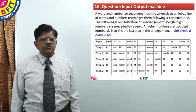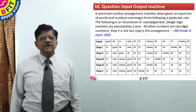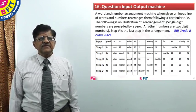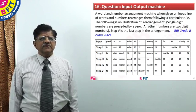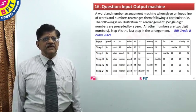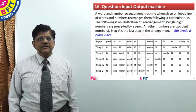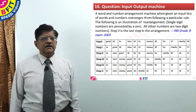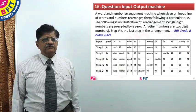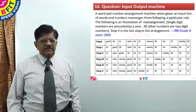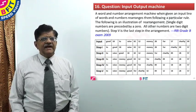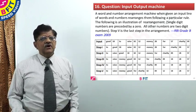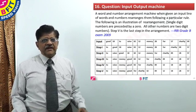What rule? We have to find out. The following is an illustration of the rearrangement. Single digit numbers are preceded by a zero. All other numbers are two digit numbers. This is extra information we are given. Step 5 is the last step in the arrangement, and in the working there are only 5 steps.